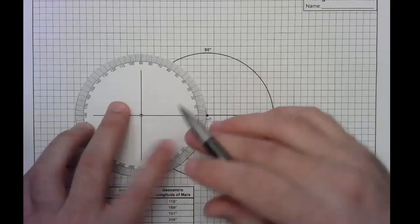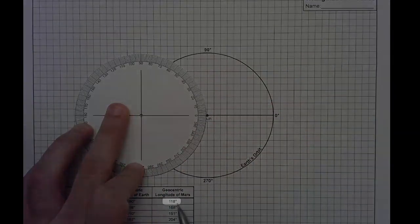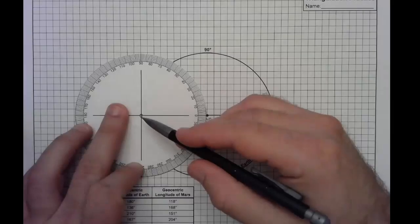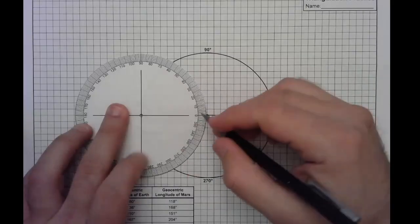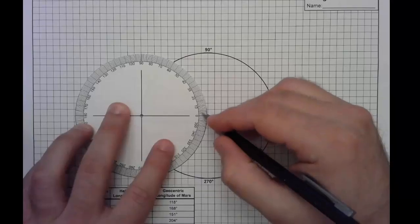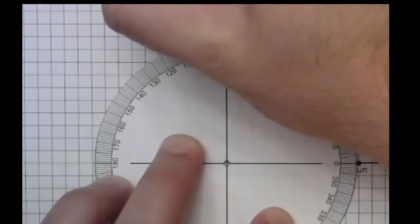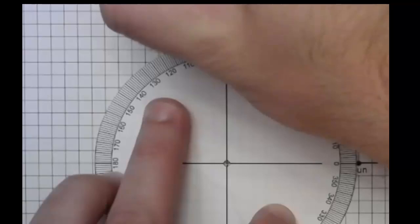So this measurement is going to be 118 degrees from 180 degrees heliocentric longitude. So we're going to measure 118 degrees all the way up here. So 110, 115, 116, 117, 118. So you're going to make a mark here.